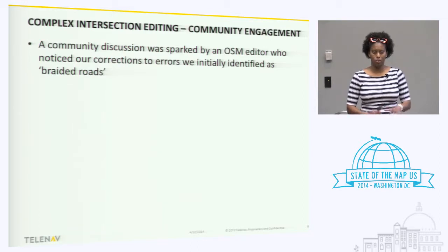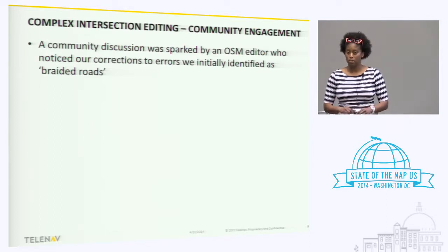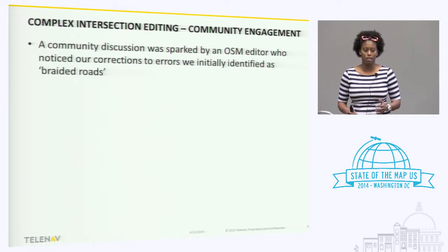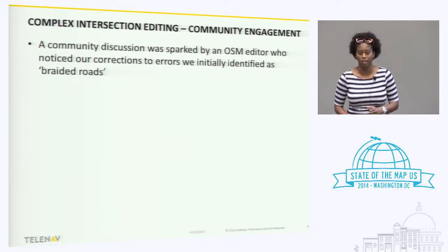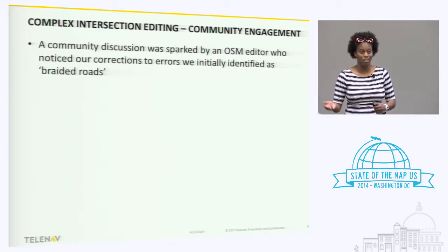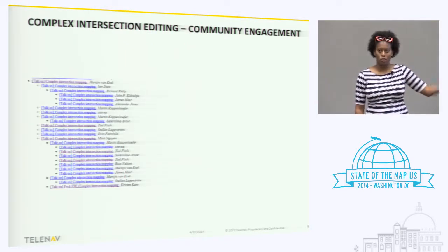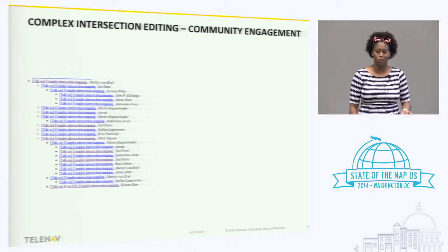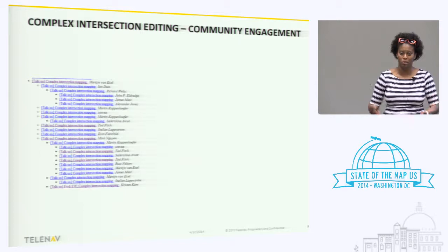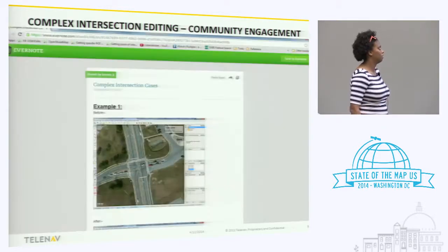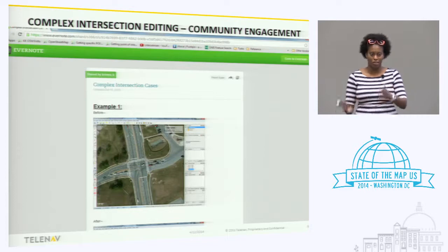So we were editing the data — this was one of the first big projects we worked on at Telenav. There was one individual who resides in Ohio that said, 'hey, you're editing these intersections that involve a transition between a single carriageway and a dual carriageway road, and I disagree with how you're making the edit.' This discussion escalated into the mailing list. There was a maybe two-week TalkUS mailing list discussion on how to edit the data. As some of you may know, there are many different ways people edit data, and sometimes it's really hard to come up with a conclusion. We participated in that, showed before and after examples on how to edit these intersections, and we came up with a conclusion on how to edit them.